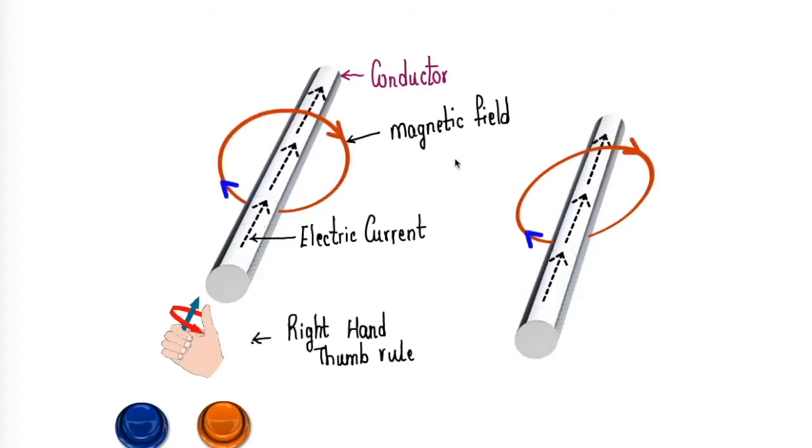Now let us begin. See, these are conductors, and when current flows through them, there exists a magnetic field in this direction, which is given by the right-hand thumb rule. If your thumb points towards the flow of current, then the direction of your fingers will show you the direction of the magnetic field. When these two conductors are considered and their magnetic field is observed closely...